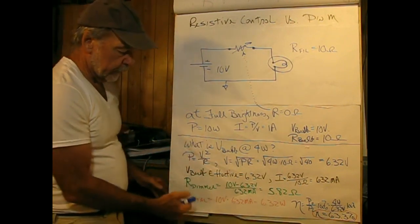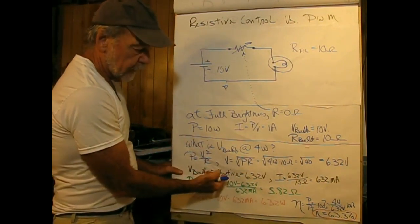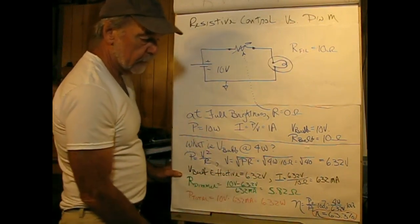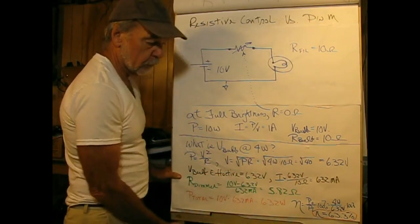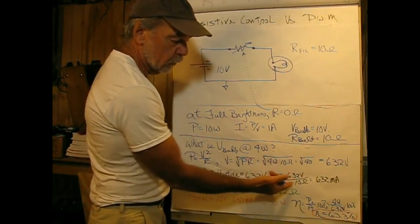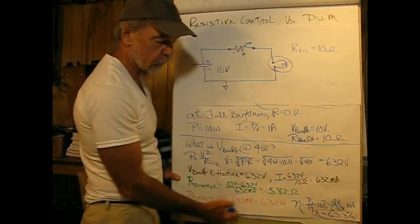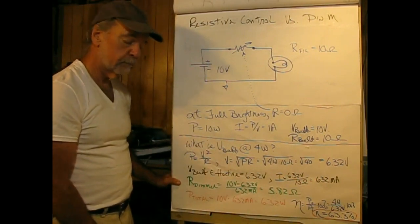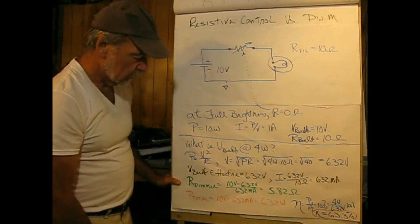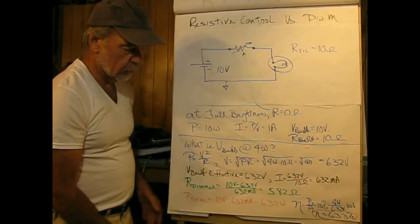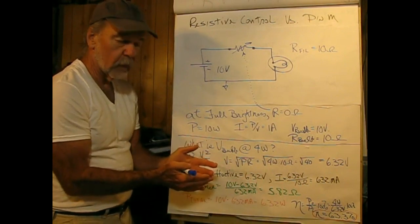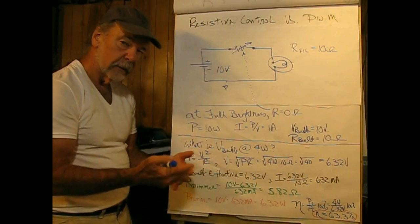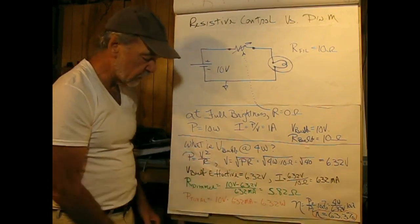Going forward, if V_bulb effective is 6.32 volts, we can say that the current through the circuit is going to be equal to the voltage divided by the resistance, which comes out to be 632 milliamperes. That kind of makes sense because we know when the bulb is full on at 10 watts it's 1 ampere, so 632 milliamperes passes that safety check.